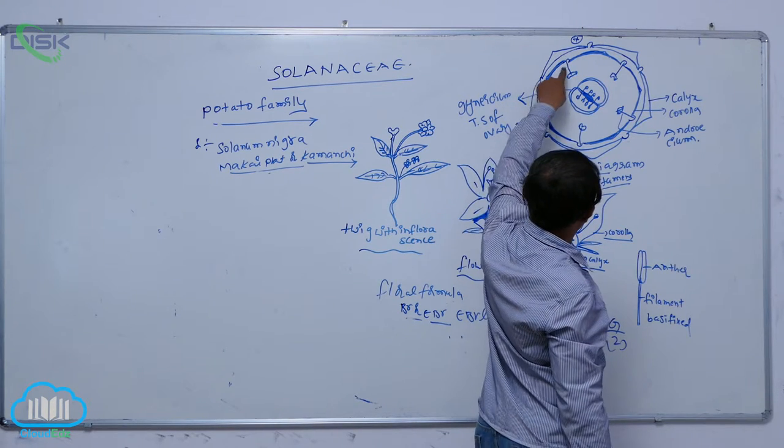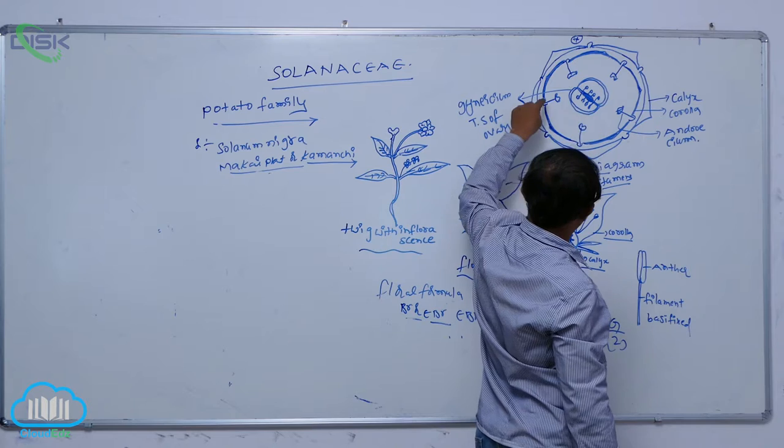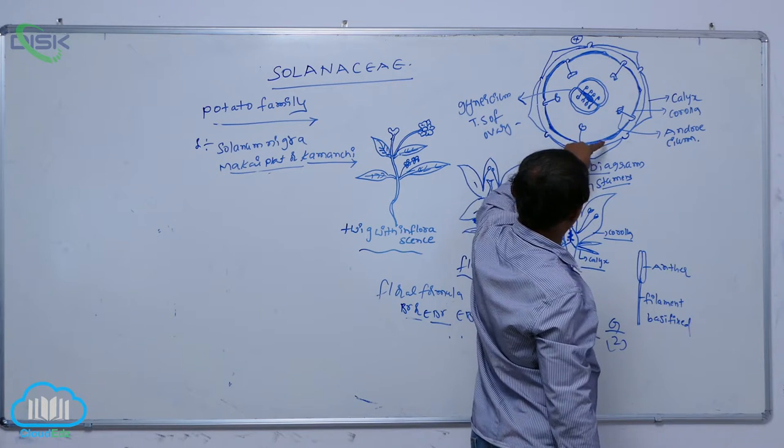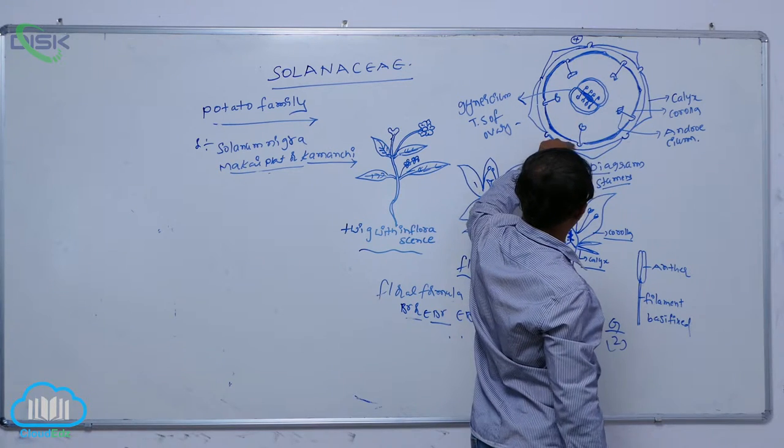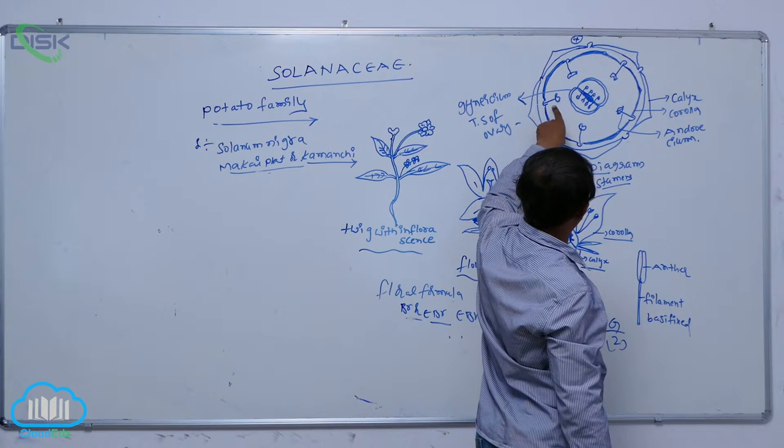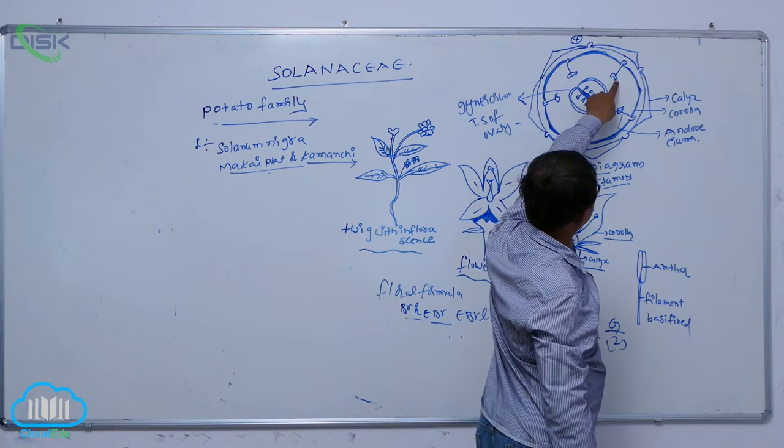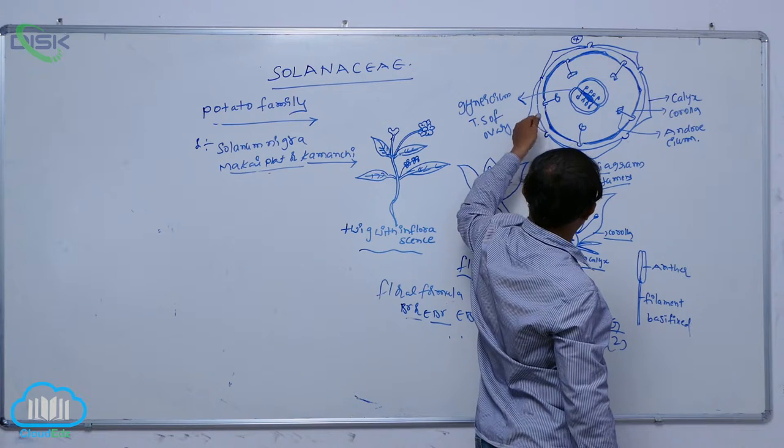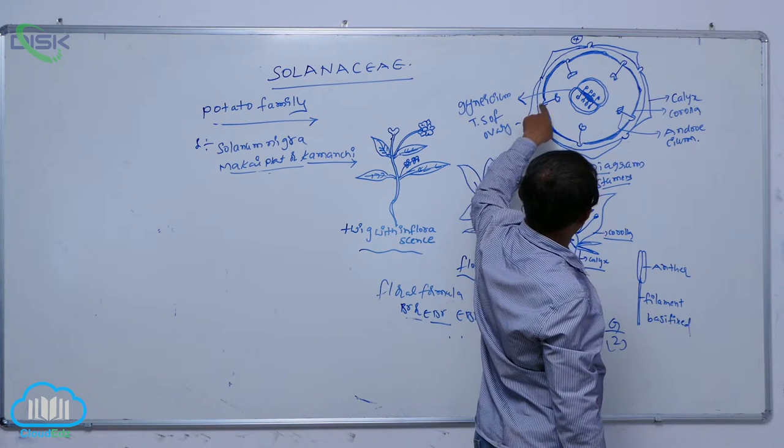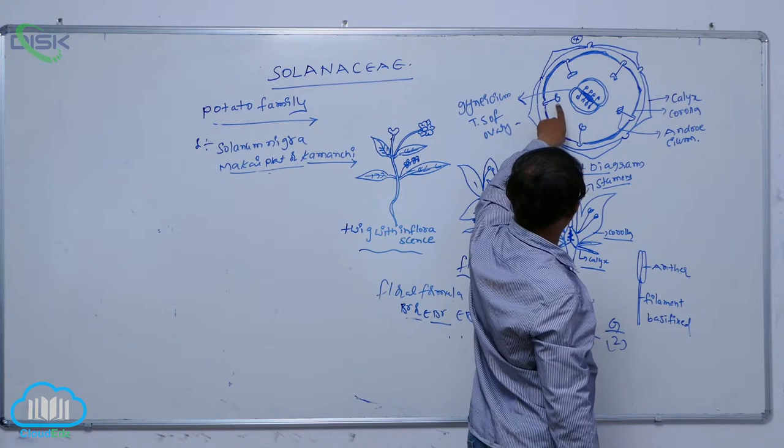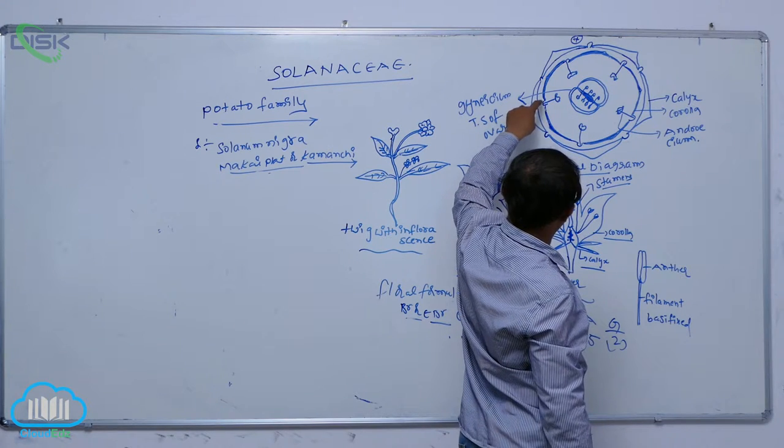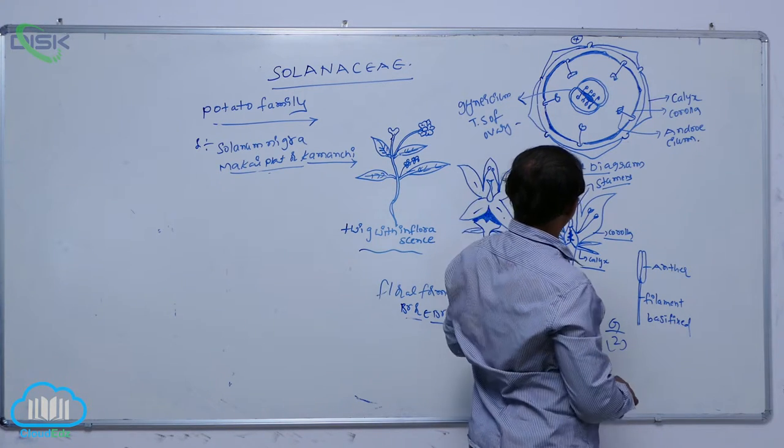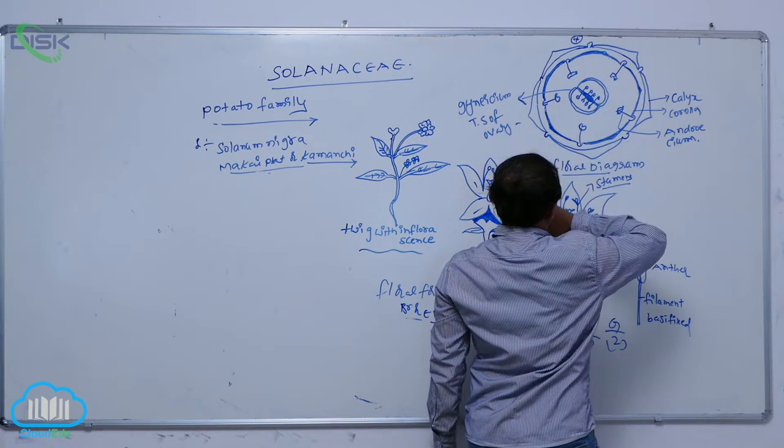Petals are five. They are that fused condition. That is known as the gamopetalous. After that, third whorl is the stamens. Stamens are five. They are alternately arranged to the petals. And stamens are attached to that petals. So that condition is known as that epipetalous condition.